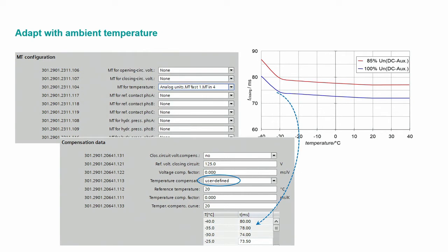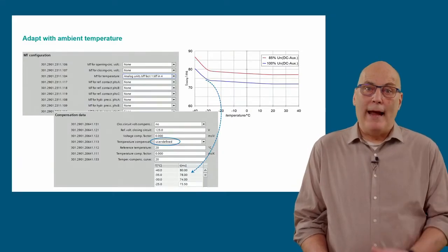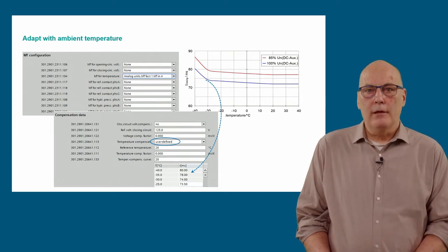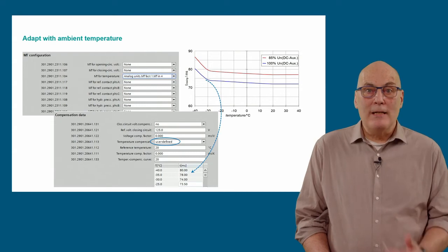If compensation of the closing time due to ambient temperature is required, this can be implemented with a temperature sensor connected to a transducer input. Configuration is done by selecting the corresponding transducer and choosing a linear or user-defined compensation. For user-defined compensation, setting points from the characteristic curve can be entered. The curve shows two influences on closing time — temperature and control voltage. Control voltage has a linear influence between 85 and 100% of nominal voltage, considered separately. Temperature compensation is assumed at nominal voltage over the horizontal temperature range from minus 40 degrees C to plus 40 degrees C.